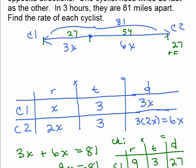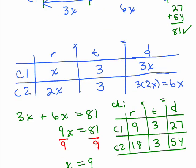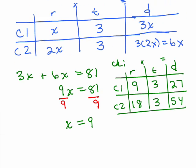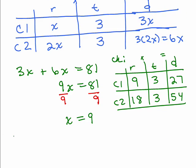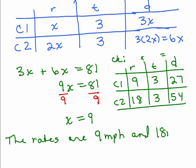All right, now let's see what the question is. Find the rate of each cyclist. Okay, so the rates are 9 miles per hour and 18 miles per hour.